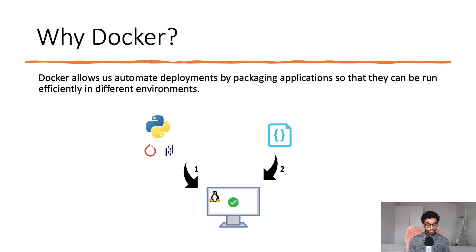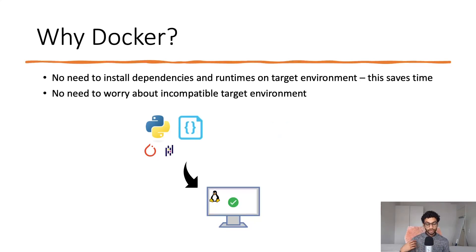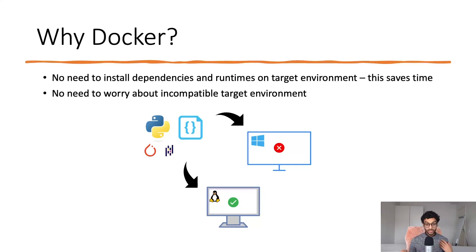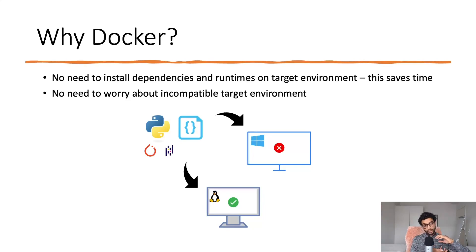Now this all looks well and good, but what happens if you want to run this on a different environment? Let's say you want to run it on a Windows environment and it doesn't work. This is a very common issue. There could be incompatibilities with the versions of the packages you're using, or you could be using a package that's only designed for Linux and isn't supported on Windows. Now with Docker, what it allows us to do is take our code, the dependencies, the runtime it needs, and the libraries it needs, and package all of that as a single file — known as a Docker image.